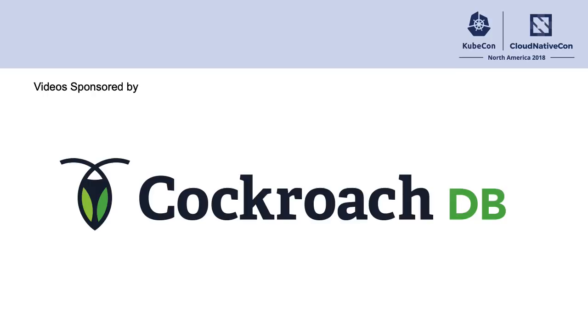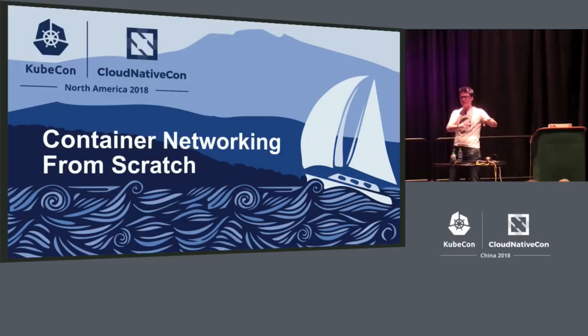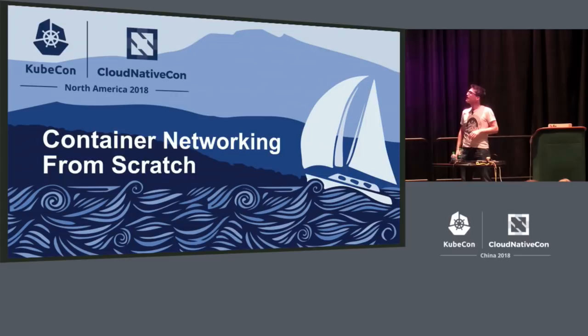I work for Oracle, and Oracle has a managed Kubernetes offering. A little while ago, I was given the job of looking at replacing the network in there, which was Flannel, with some features of the Oracle Cloud. I started digging into it and soon realized I didn't really understand how Flannel worked. It seemed wrong to replace one thing with another if you don't understand the thing you're replacing. So I dug into it a bit deeper, and it became apparent that I didn't really understand any of this networking stuff at all.